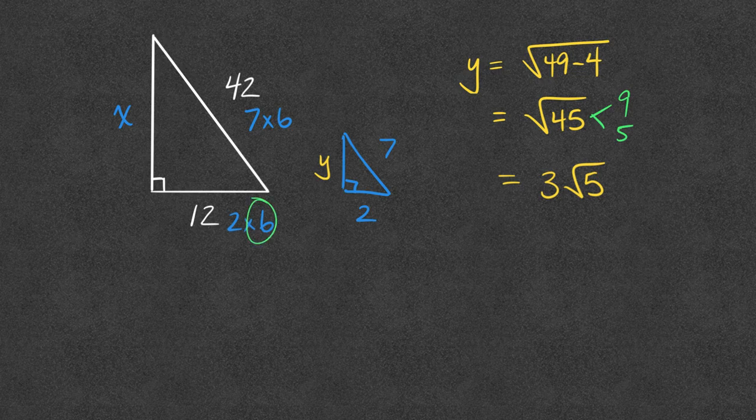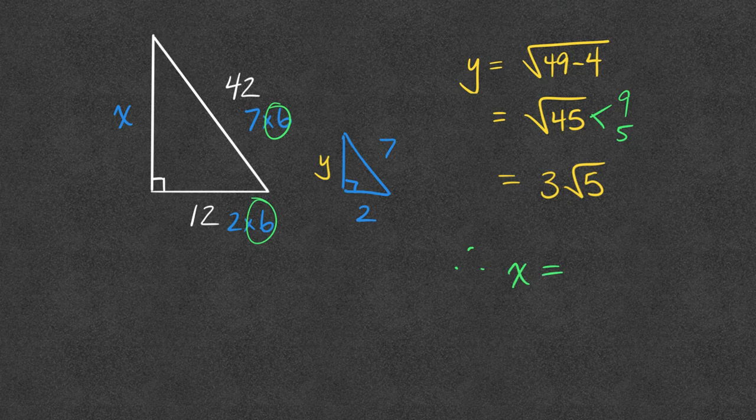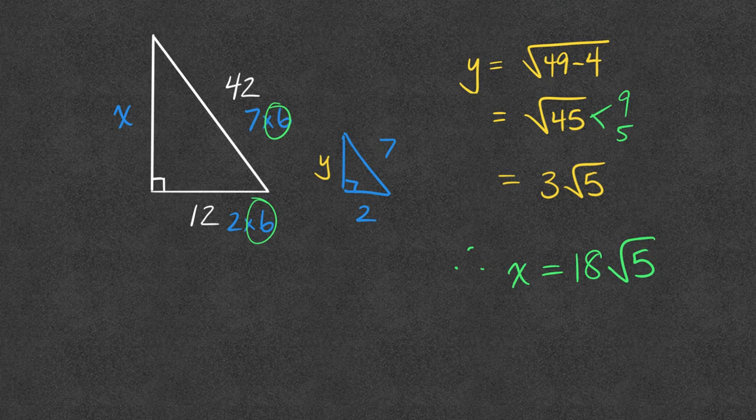What was the shared factor on my big triangle? It was 6. So now I need to take that and multiply it by 6. I just found the length of x, keeping my numbers super small and manageable.